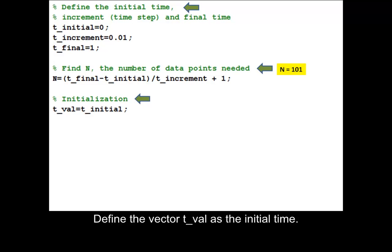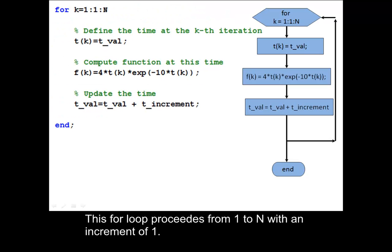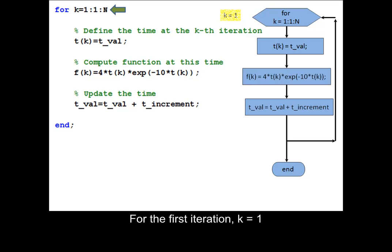Define the vector tval as the initial time. This for loop proceeds from 1 to n with an increment of 1. For the first iteration, k equals 1.